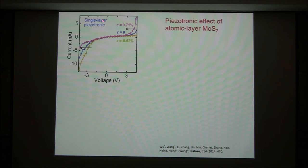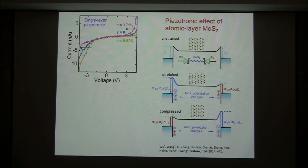It can also have a piezotronic effect with a single atomic layer of molybdenum disulfide. At zero strain — the blue curve — on 0.71% tensile strain, on the positive bias, the current increases. Here the current drops. This is an asymmetric effect change because of the asymmetric distribution of charge at the two ends.